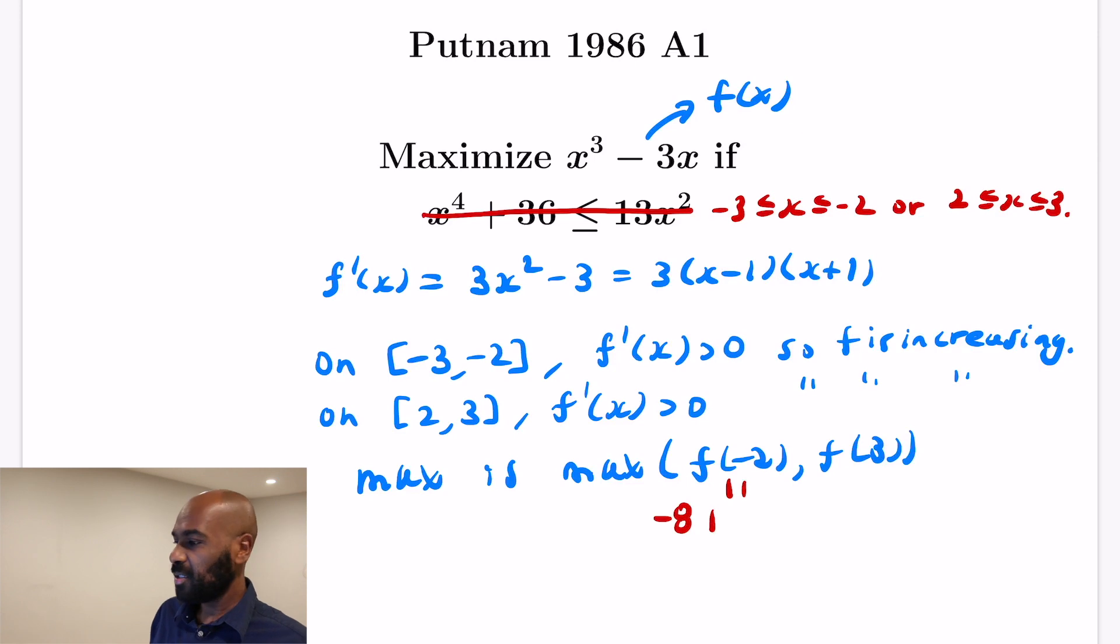And f(3) is quite larger. It's 27 - 9 which is 18. So the maximum of this thing is 18.